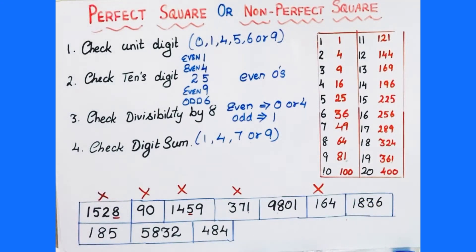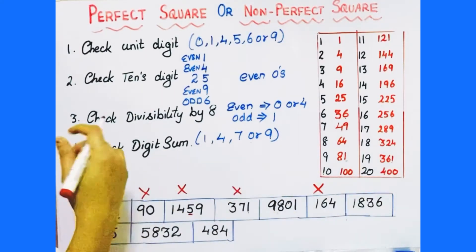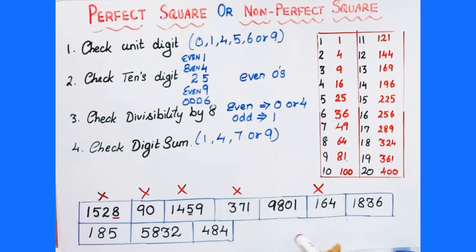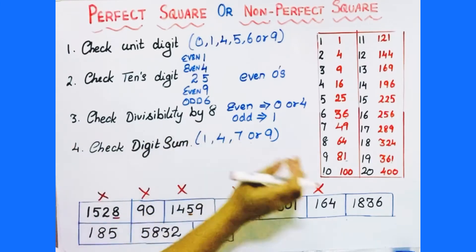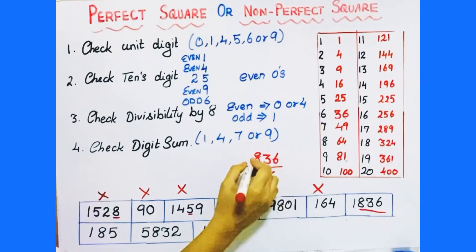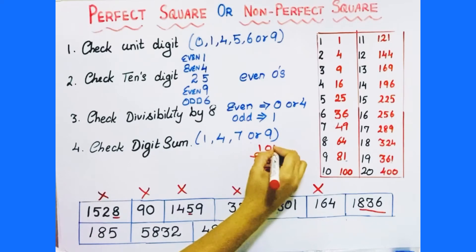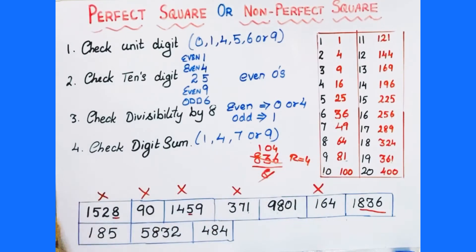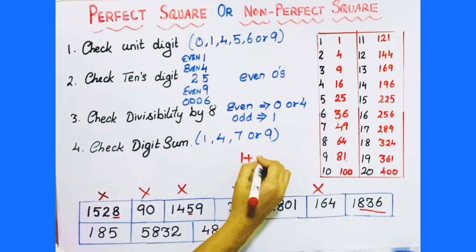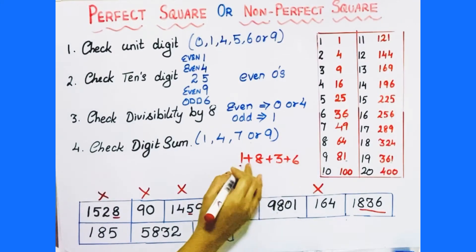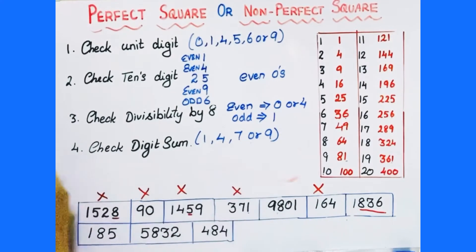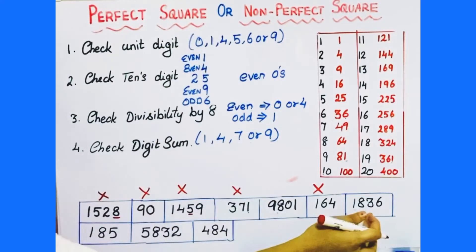Next number is 1836. First test: unit digit is 6 — passed. Next: tens digit should be an odd number — yes, it is odd — passed. Third test: divisibility by 8 — take the last 3 digits, 836, divide by 8. The remainder is 4 — passed. Next test: digit sum — 1 plus 8 plus 3 plus 6 equals 18, then 1 plus 8 equals 9. Digit sum is 9 — passed. So 1836 passes all four tests and might be a perfect square number.